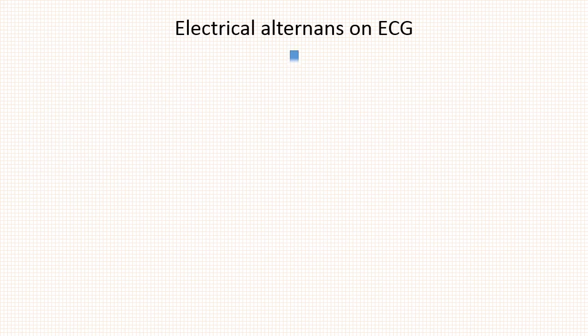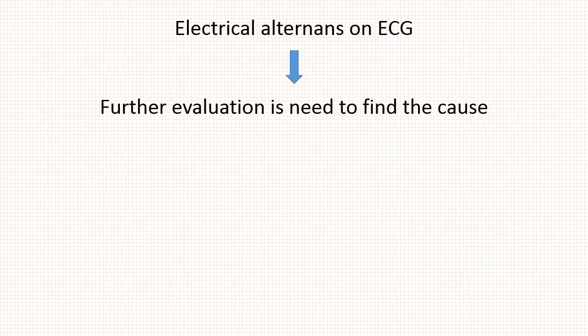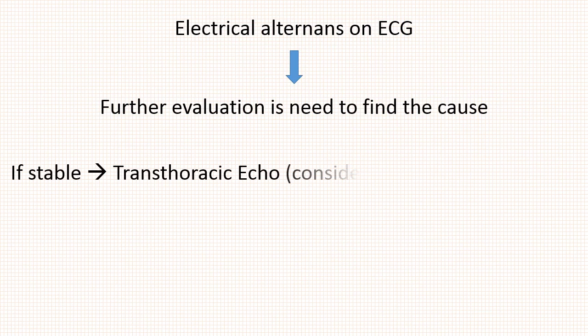When you come across the electrical alternance pattern on ECG, further evaluation is needed to find the cause. If the patient is stable, transthoracic echo is done considering pericardial effusion.